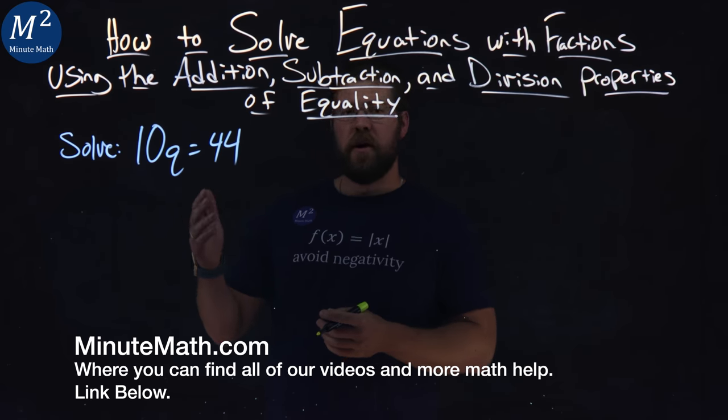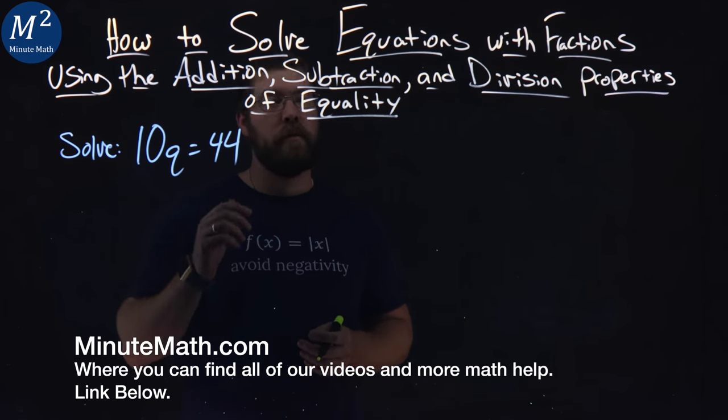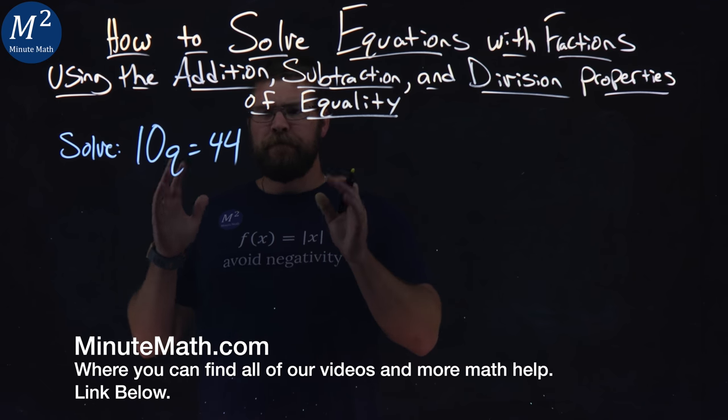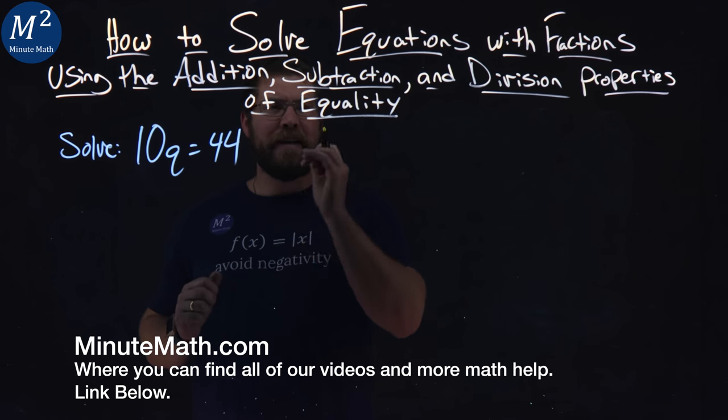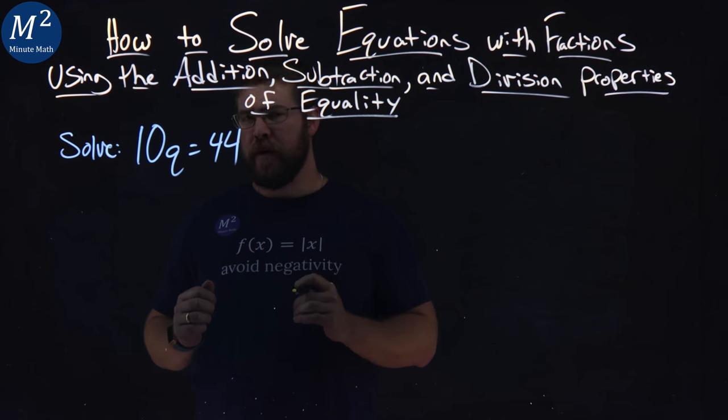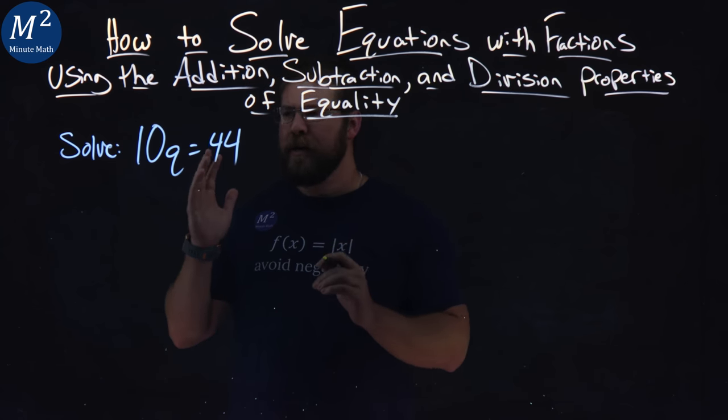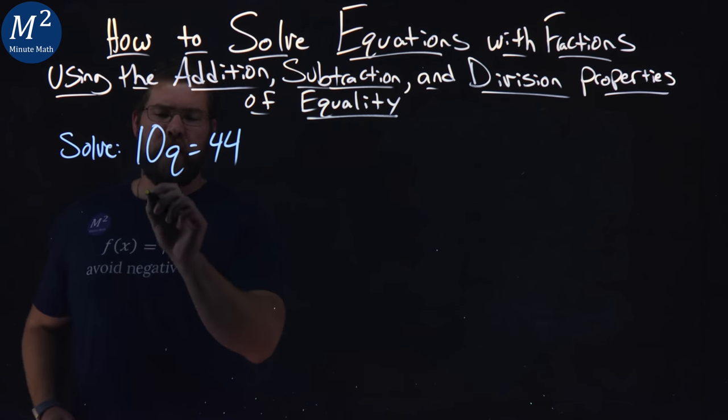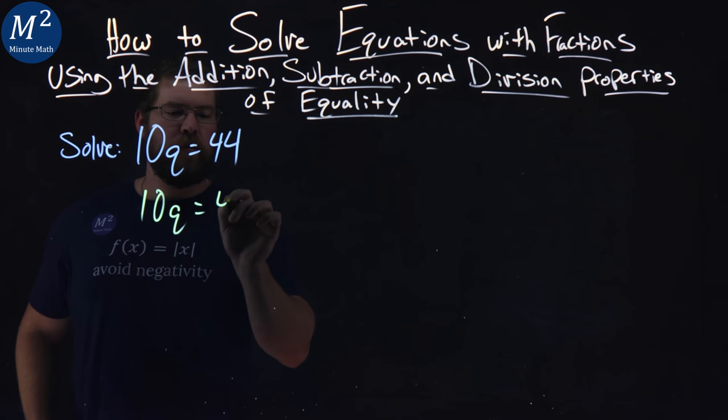We're given this problem right here. Solve 10q equals 44. I'm going to use my division property of equality here. If I divide both parts, let's rewrite it first: 10q equals 44.